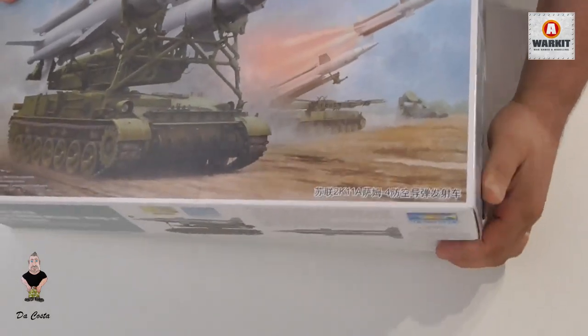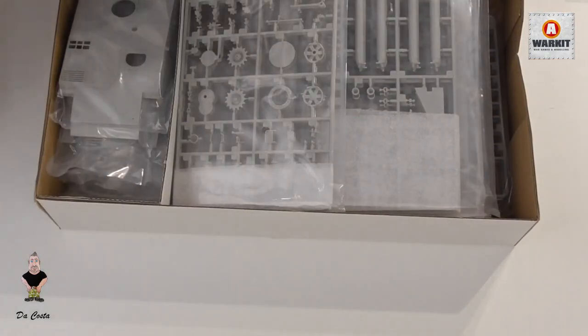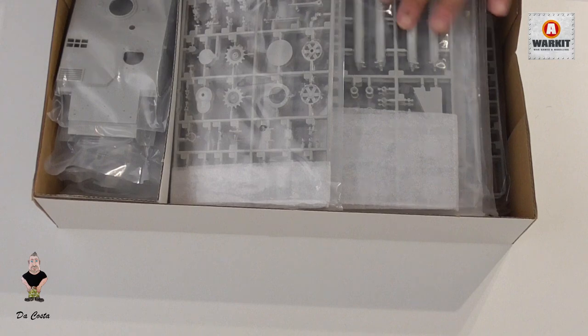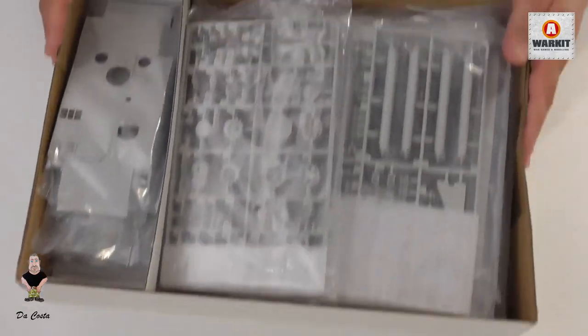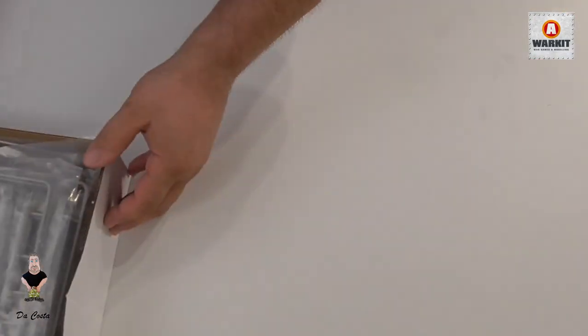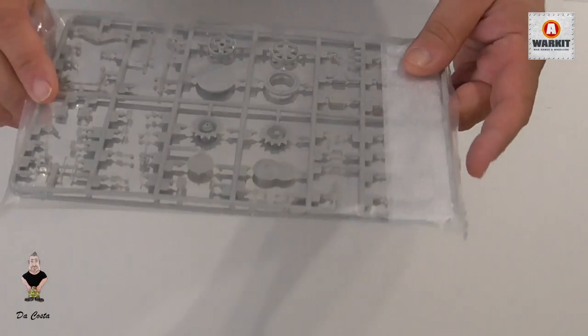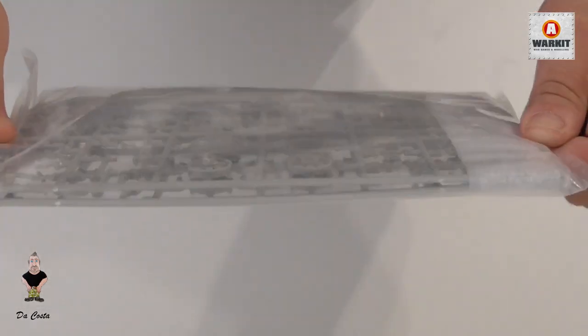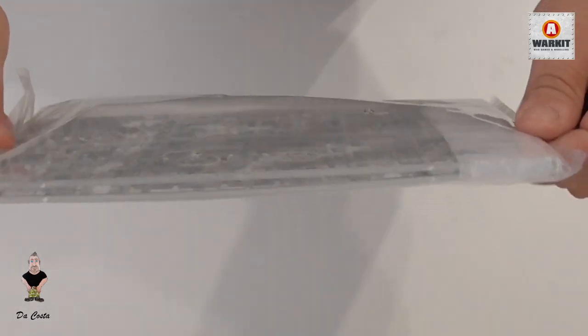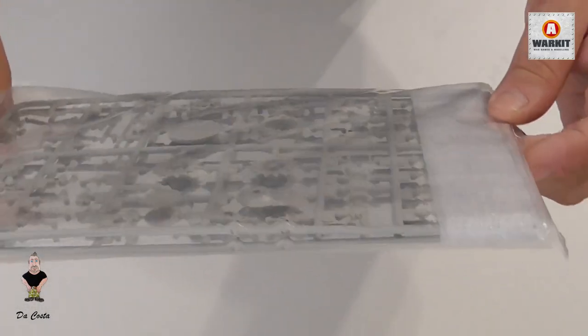So many sprues! I'm going to put this aside and start showing the sprues. We've got two equal sprues with the sprockets, the idle wheels, some parts of fenders, hooks, and other parts.